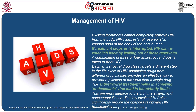Now let us look at the management of HIV. Existing treatments cannot completely remove HIV from the body. HIV hides in viral reservoirs in various parts of the body of the human host. If the treatment stops or is interrupted, HIV can re-establish itself by leaking out of these reservoirs. A combination of three or four anti-retroviral drugs is taken to treat HIV. Each anti-retroviral drug class targets a different step in the life cycle of HIV, and combining drugs from different classes provides a more effective way to prevent viral replication. The anti-retroviral treatment helps in achieving undetectable viral load in the blood or body fluids, preventing damage to the immune system and reducing the chances of onward HIV transmission.